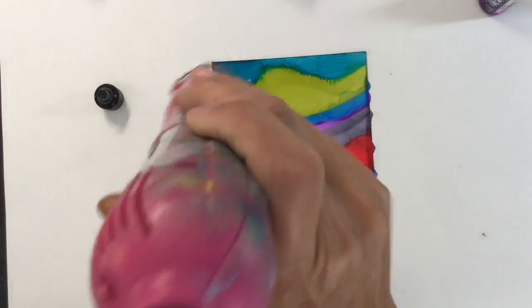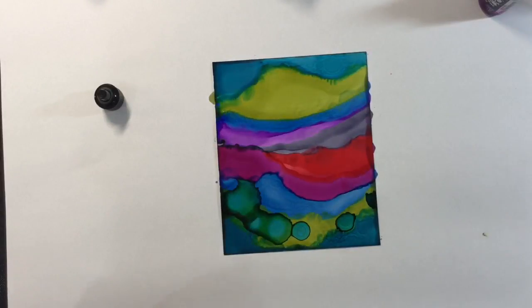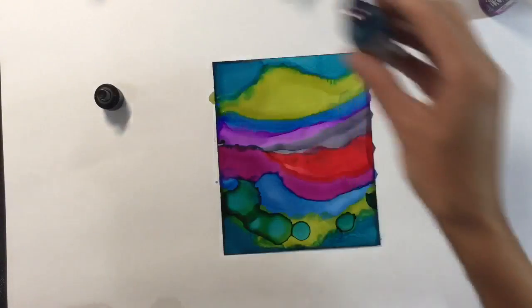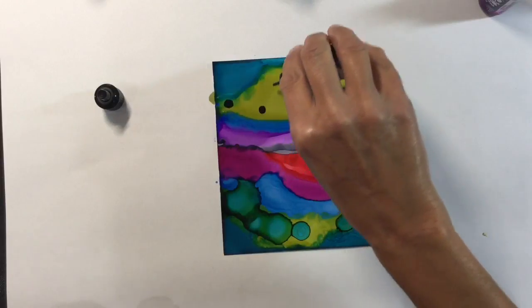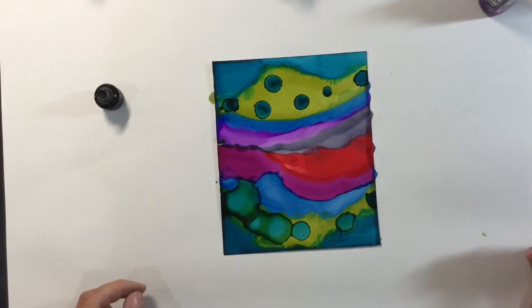Heat setting with my heat tool to stop the blooms developing any further before repeating on that strip of lettuce again. I just think if you repeat a pattern it just looks visually pleasing to the eye.